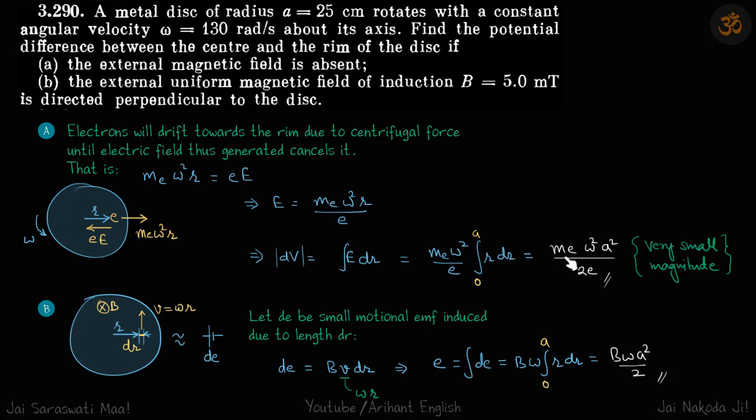Here the ratio of mass of electron to electronic charge is very small, so it is of a very small magnitude. And that's the reason we are going to ignore it in part B where the emf induced because of the external magnetic field is much more than emf because of the centrifugal force.